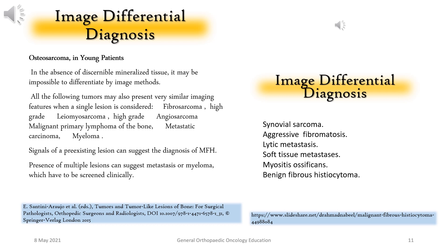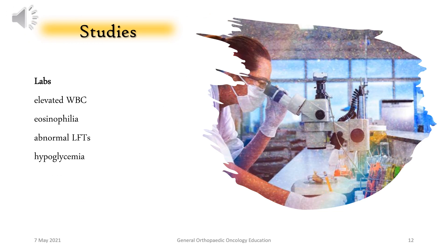Additional image differentials include synovial sarcoma, aggressive fibromatosis, lytic metastasis, soft tissue metastases, myositis ossificans, and benign fibrous histiocytoma. Laboratory findings may include elevated WBC, eosinophilia, abnormal LFTs, and hypoglycemia.